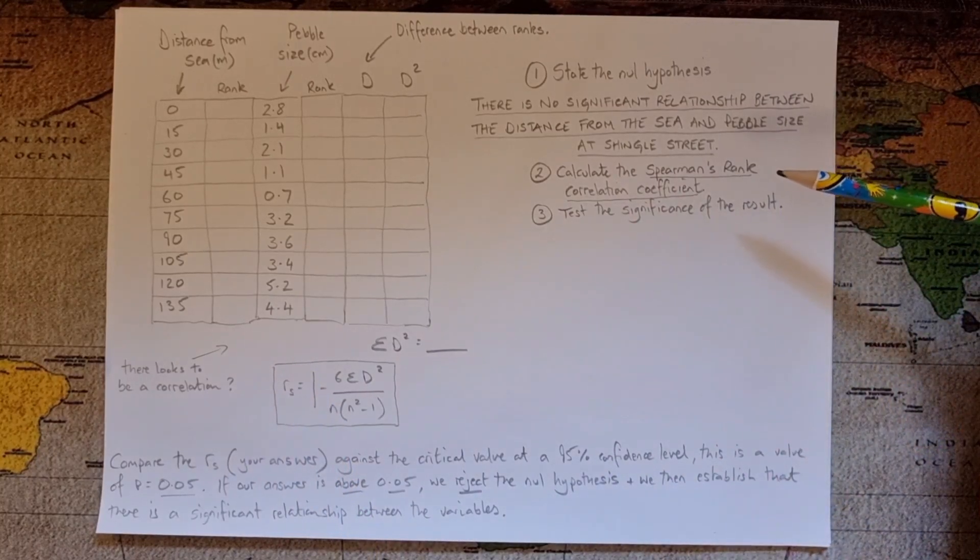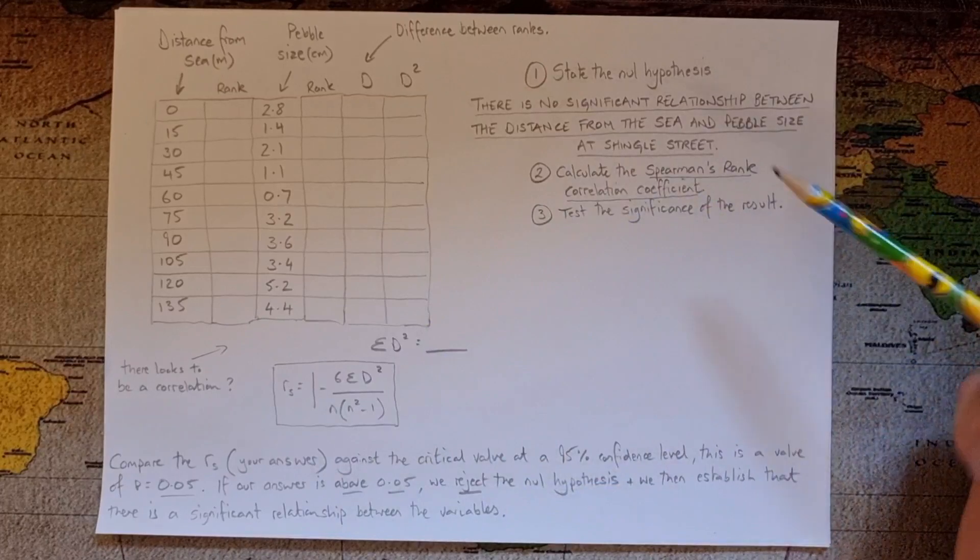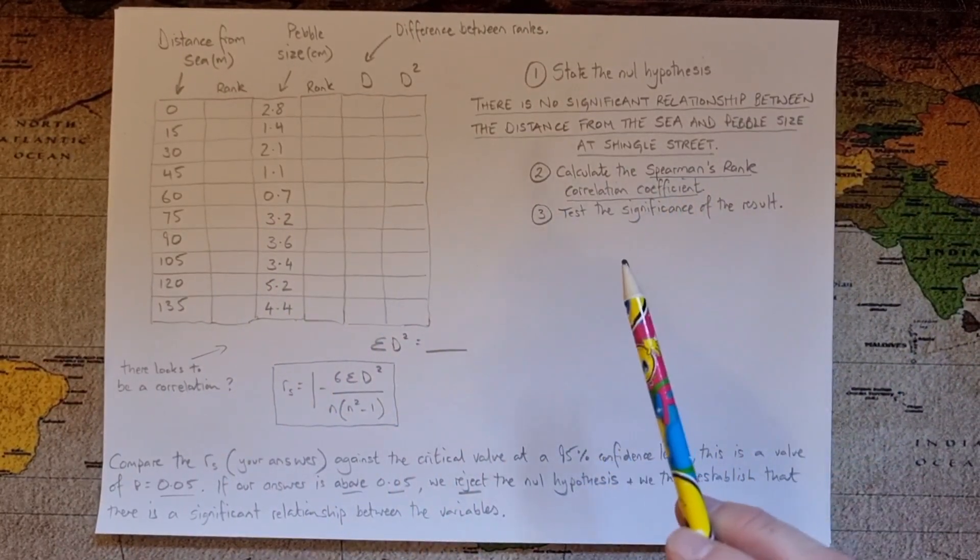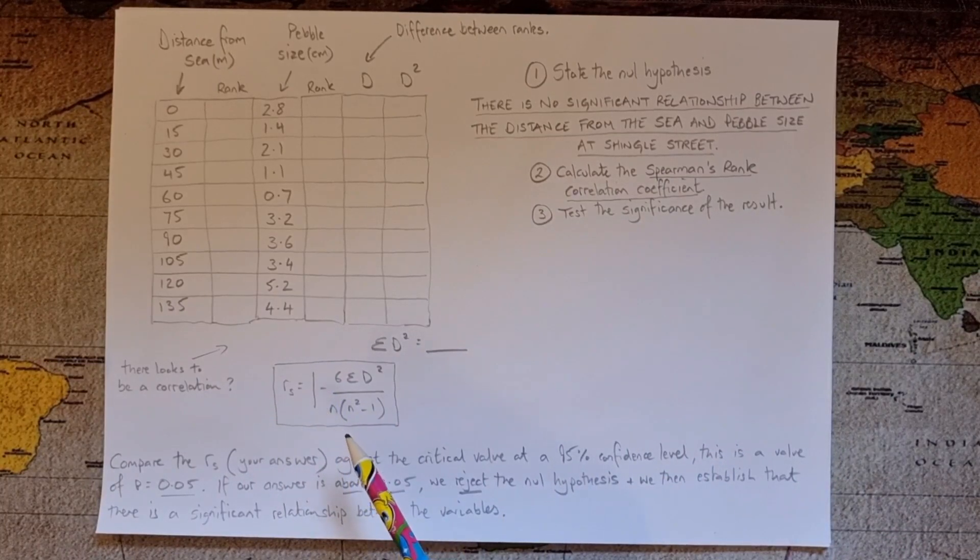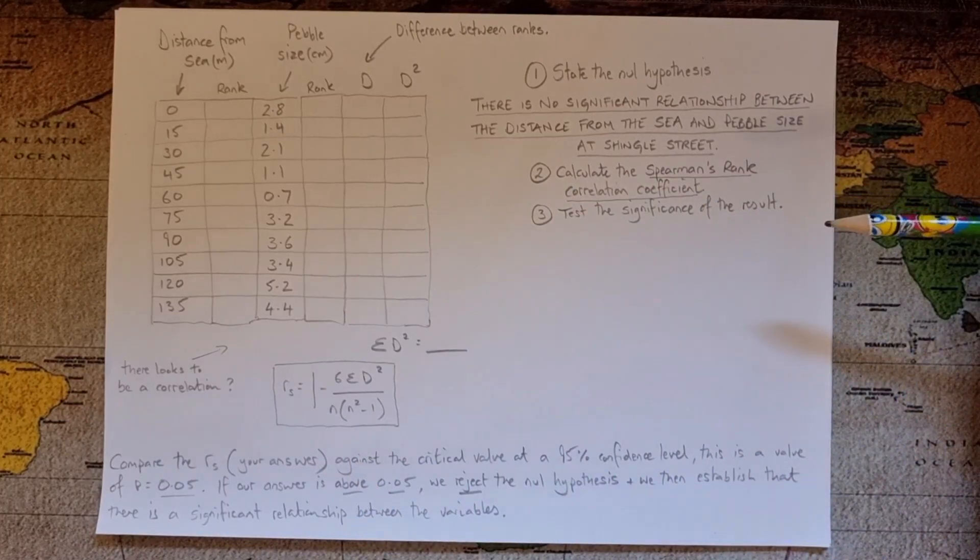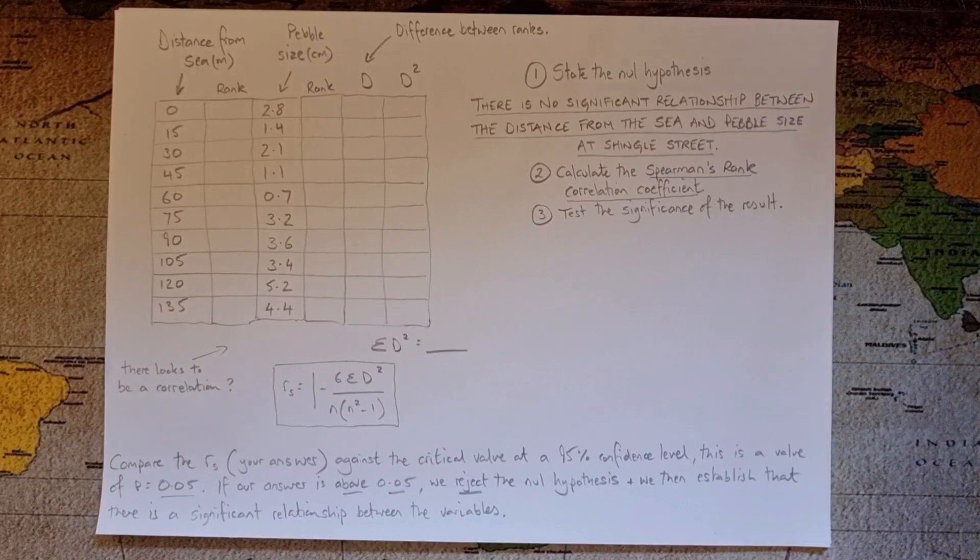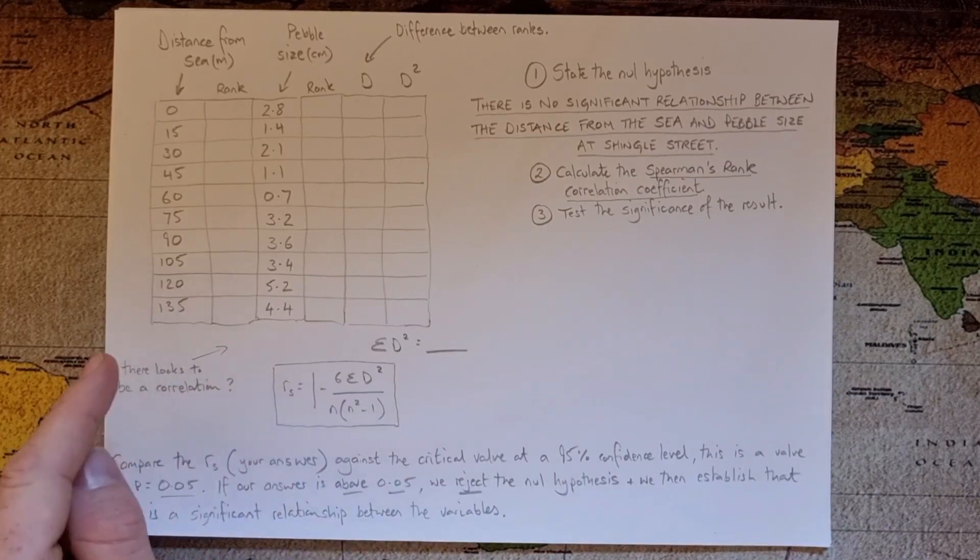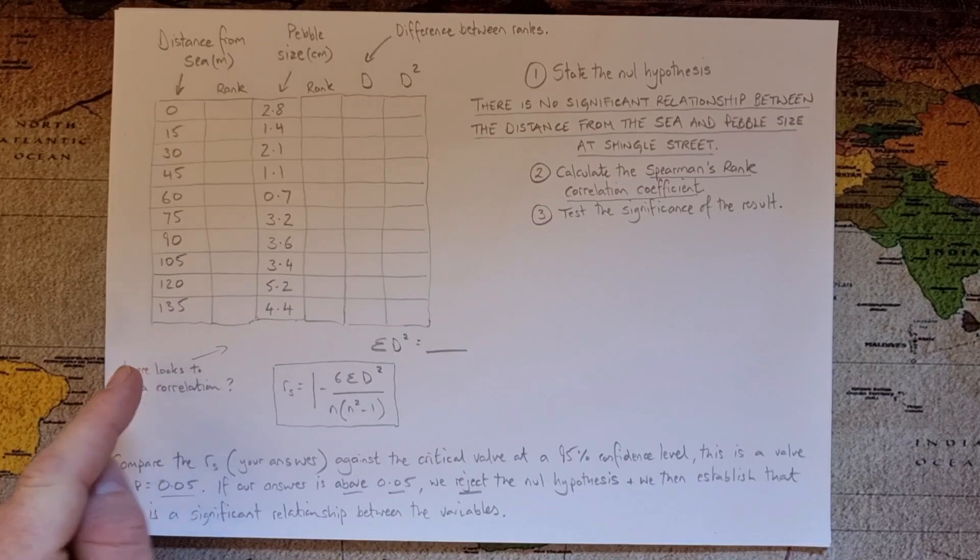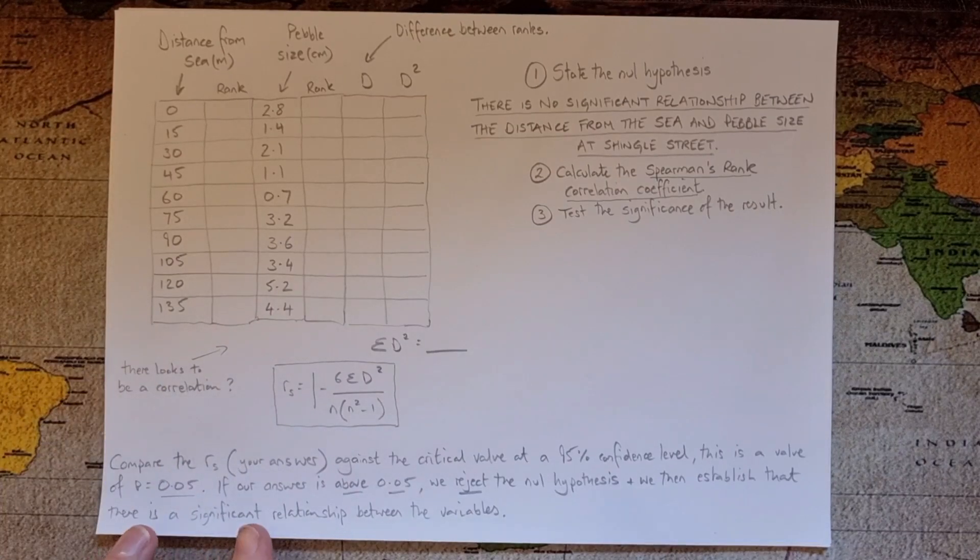We then do some things with the data and calculate the Spearman's rank correlation coefficient using this formula, which is a lot less intimidating than it at first looks to some people. And then we think about what that result means once we find the number. So first job when we're doing this, we need to think about ranking our data. Now in the first instance, distance from the sea in meters, this is really quite straightforward. We just rank from largest to smallest.